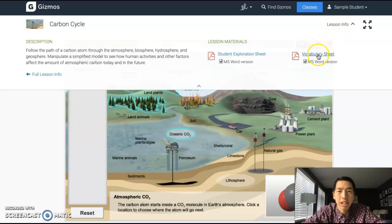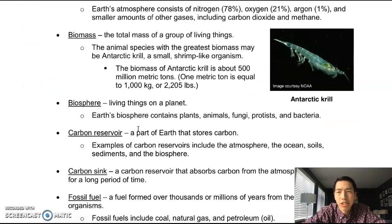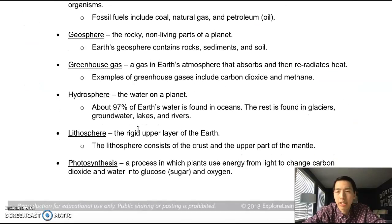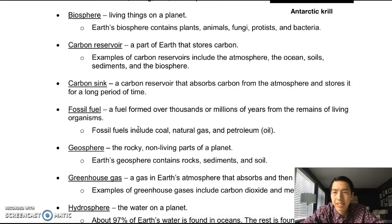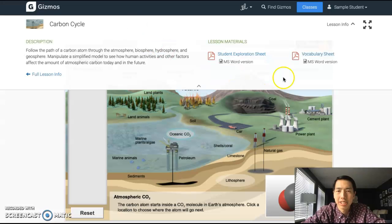There's something called the vocabulary sheet, so you can click on the vocabulary sheet and it gives you the definitions of various words that you might come across during this lesson. You're going to have to use this to find a few definitions for one of the questions on the Google form. All right, so that's just how you get to the vocabulary sheet.